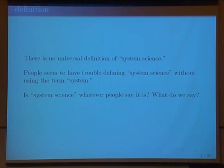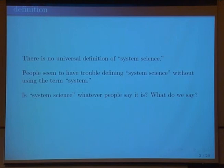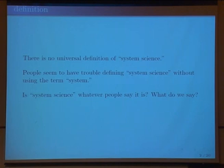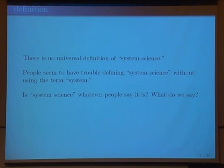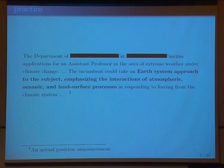There really is no universal definition of what system science is. Nobody seems to be able to define it well without using the phrase 'system.' In the end, it may well be that system science is what you say it is, and other communities have weighed in — now it's our chance. But our perceptions about system science have been heavily colored by what the Earth scientists have done. They adopted systems as their rubric, their organizing principle, 25 years ago, and I think we're talking about this in large part because of that.